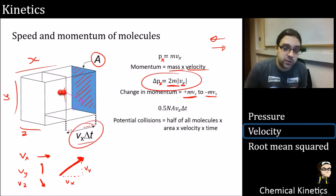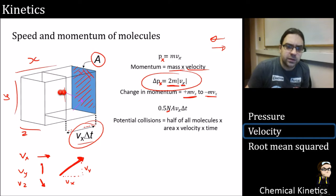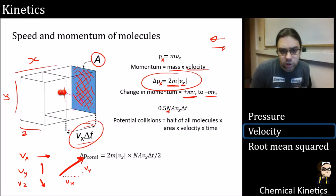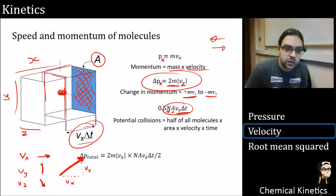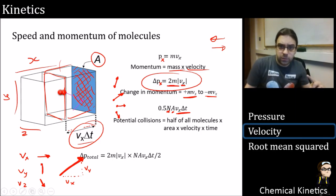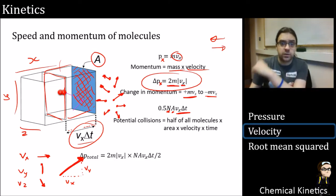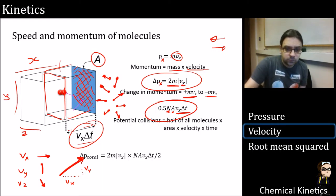Now, how many potential collisions are there? We have N — the total number of molecules per volume — and we want to calculate the number that could actually make a collision with the wall. We take that area A and multiply by the distance vx·delta-t, giving the number of molecules in that sub-box. We then take only half of those, because 50% of molecules are heading towards the wall and the other half are flying in the opposite direction and won't reach it. Statistically, only half are heading in the right direction.